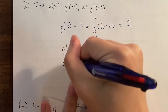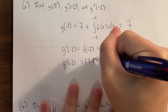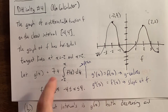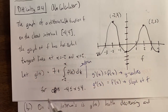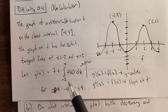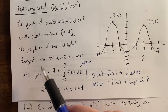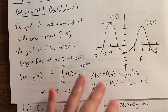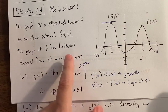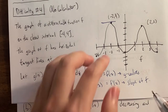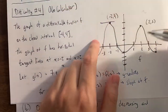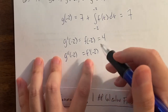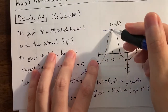G double prime of negative 2 is f prime of negative 2 — the slope of f at that point. We are given that f has a horizontal tangent line at negative 2. Horizontal means the slope is 0, so the derivative is 0. Therefore g double prime of negative 2 equals 0. Notice how easy these questions are — we didn't actually have to take any areas. If you know that g is area, g prime equals y values, and g double prime equals slope, you're good to go.